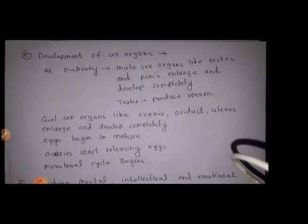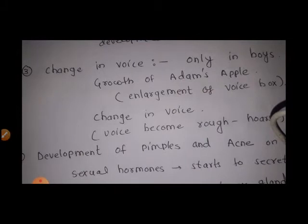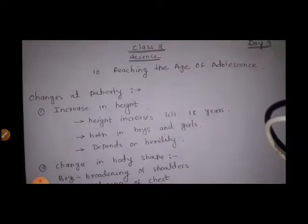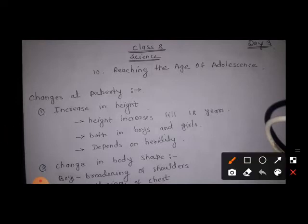These are the characteristics which are developed in boys and girls at the time of puberty. Write all these notes in your notebook, and try to gain more information about adolescence from videos or the internet. Also, read this chapter from the textbook. This was our Day 3 — I hope you understood this video. The remaining portion we will discuss in the next video. Okay, bye!